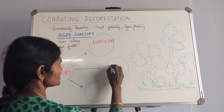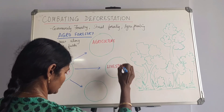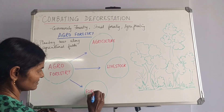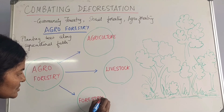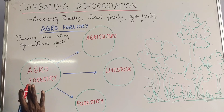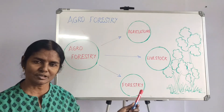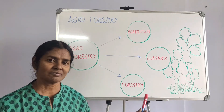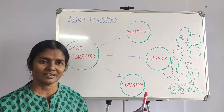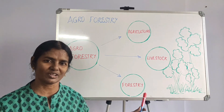And of course, forestry itself improves as trees are grown. So these are the three dimensions of agroforestry. Whether it's agroforestry, social forestry, or joint forest management, as environmental students, let us take a pledge to prevent and protect our forests. With that, we have finished this chapter, and I look forward to seeing you in the next chapter.